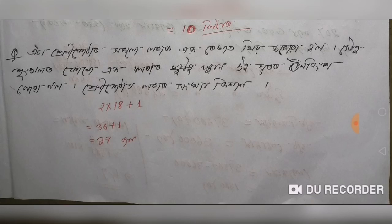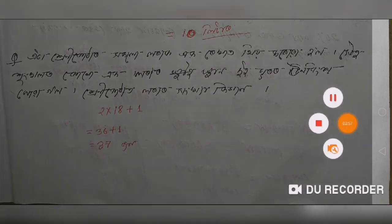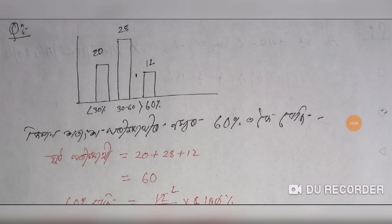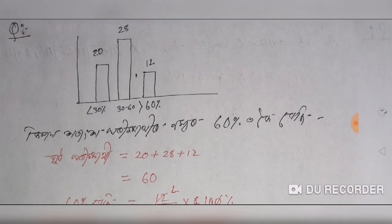It is about 30%, and 30% is about 37%. We have a graph to show that 30% is about 60%. The average is 60%, and this is how much the average of 60% is.